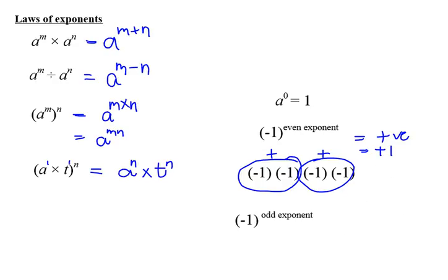An odd exponent, negative 1 to an odd exponent, will result in a negative number. So we have negative 1.